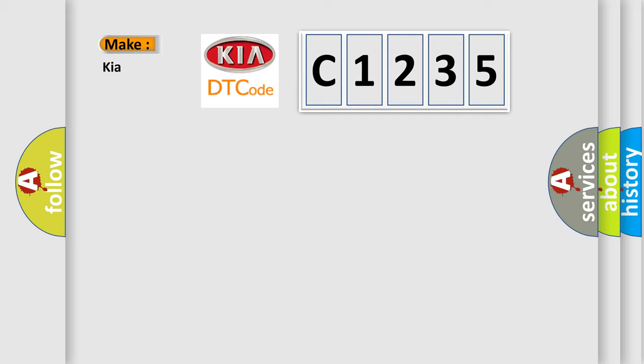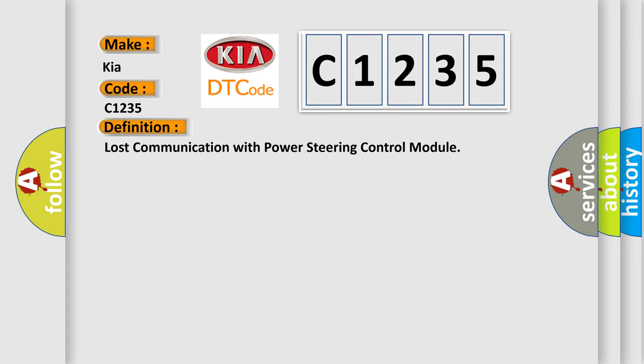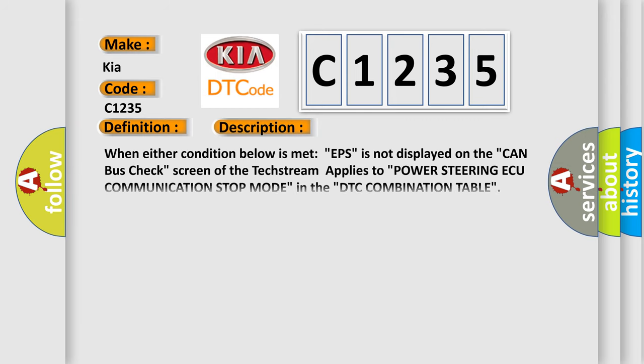So, what does the diagnostic trouble code C1235 interpret specifically for KIA car manufacturers? The basic definition is lost communication with power steering control module. And now this is a short description of this DTC code.